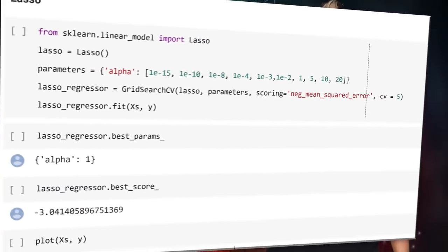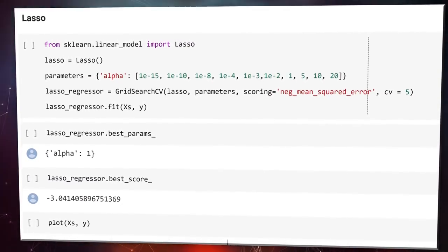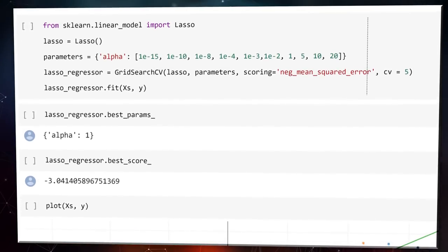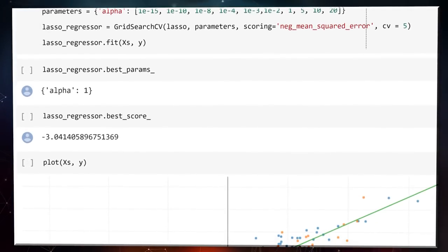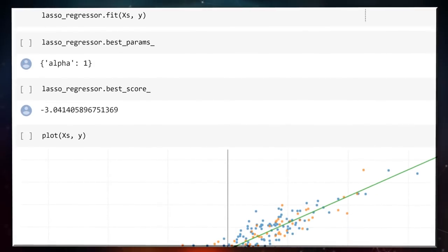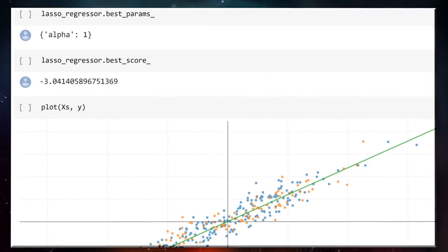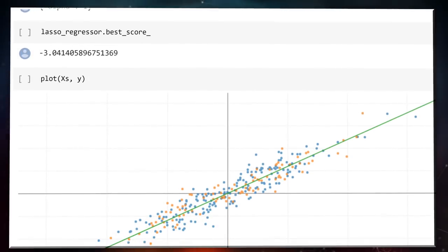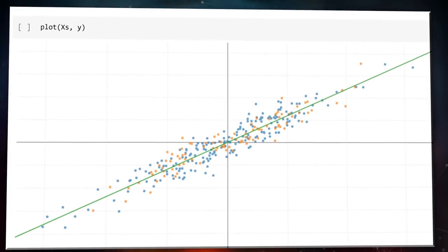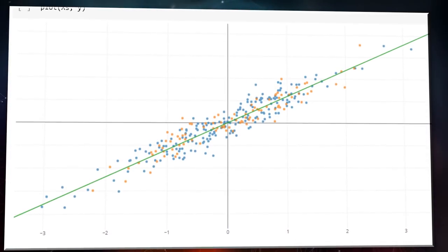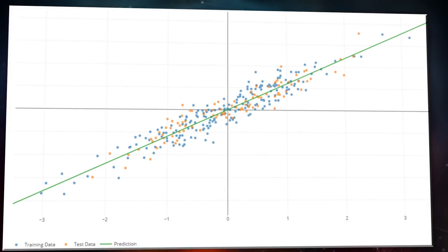When we implement lasso, it looks similar to ridge, and our resulting alpha and MSE are the best scores of any model we've used. Looks like lasso is the way to go. Using this model, we can give it values for how much we will spend on different advertising mediums, and it will predict the amount of sales we'll make, which lets us much more efficiently allocate funds towards the medium we want to use, saving us money and thus increasing our revenue.